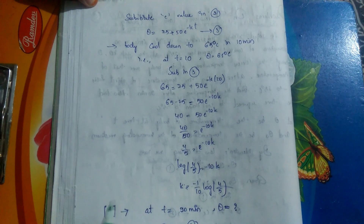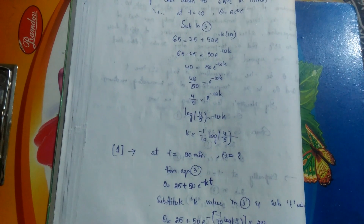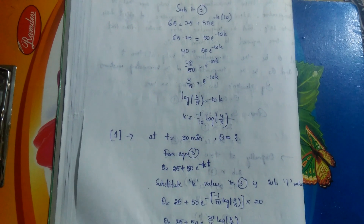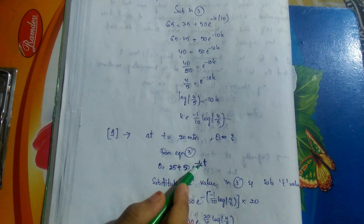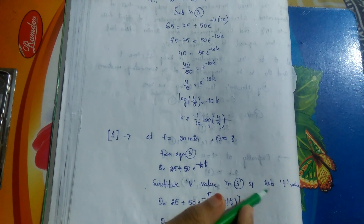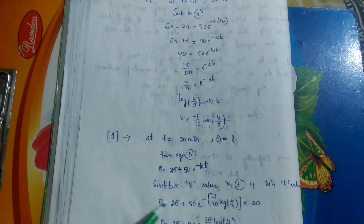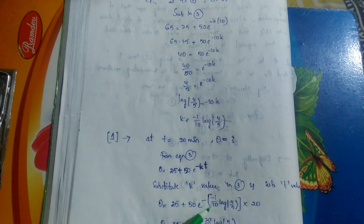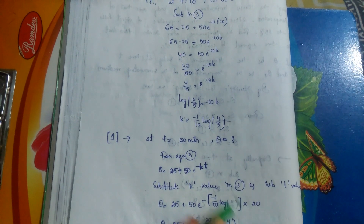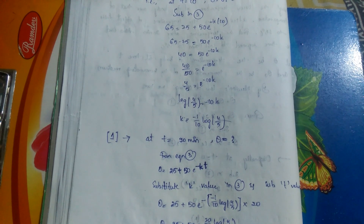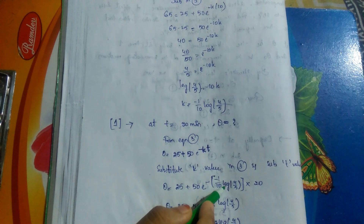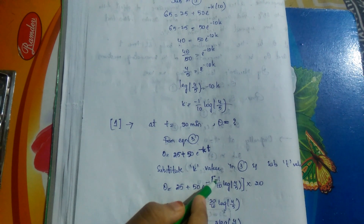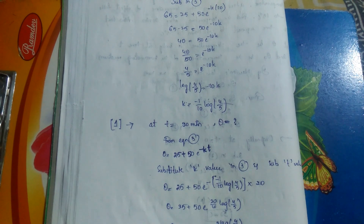From this, k = −(1/10)·log(4/5). Now for the first part: find the temperature when T = 20 minutes. From equation 3, θ = 25 + 50·e^(−kT). Substituting k = −(1/10)·log(4/5) and T = 20: θ = 25 + 50·e^((1/10)·log(4/5)·20) = 25 + 50·e^(2·log(4/5)).